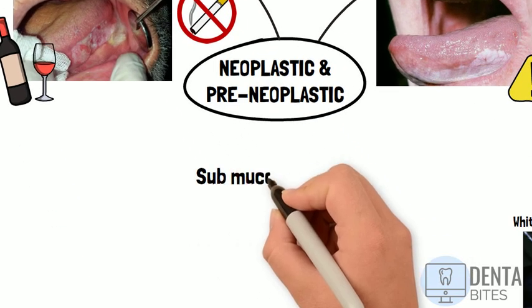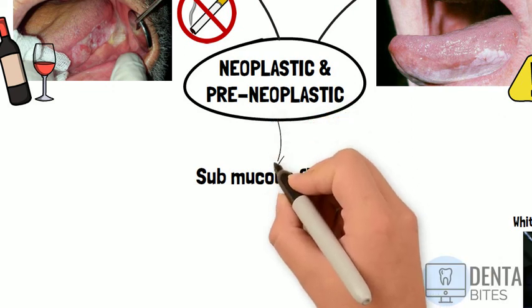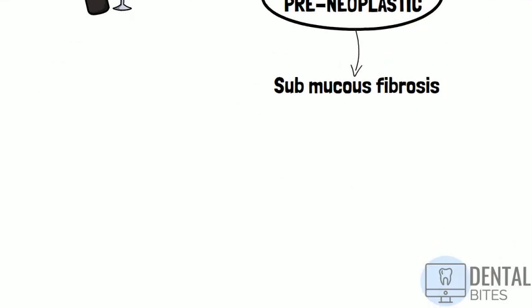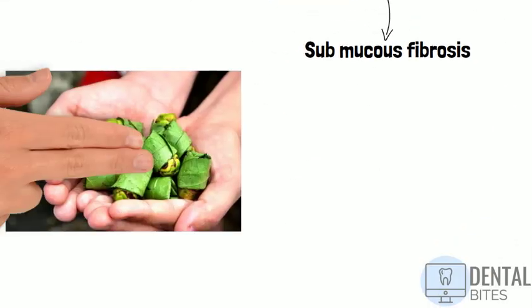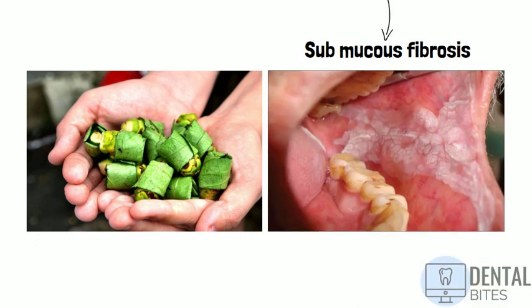Submucous fibrosis is a pre-malignant condition caused by betel nut chewing and mainly affects patients from Southeast Asia or India. It's characterised by the development of fibrous tissue in the buccal mucosa and palate, which can cause whitening of the mucosa and restricted mouth opening.